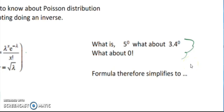So you've had a play in your calculator, and you've found that 5 to the power of 0, 3.4 to the power of 0, in fact, anything to the power of 0 is equal to 1. And what about 0 factorial? Well, that is equal to 1 as well.